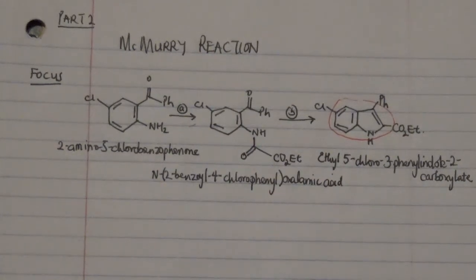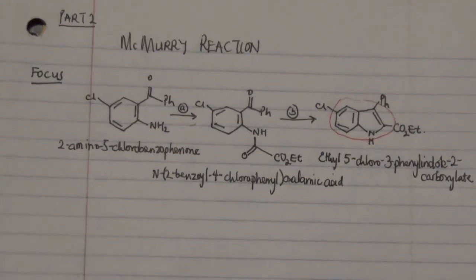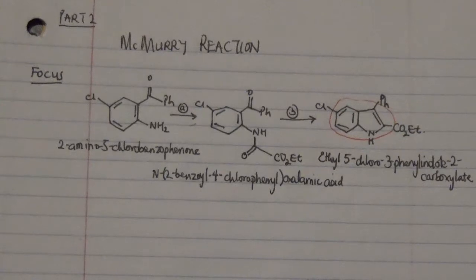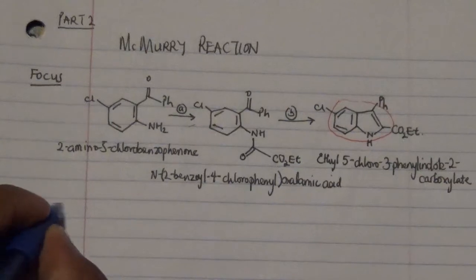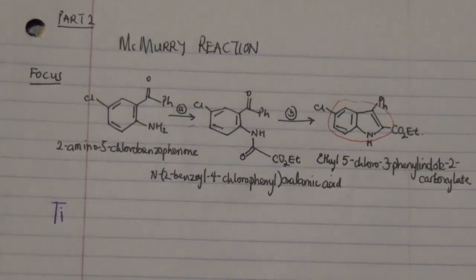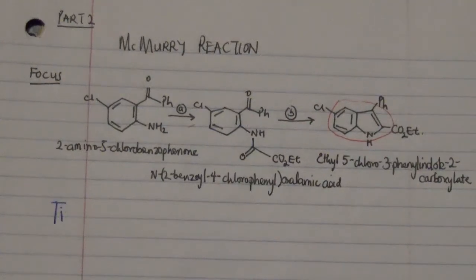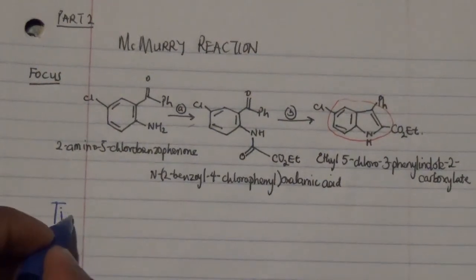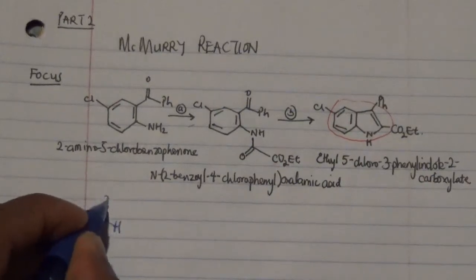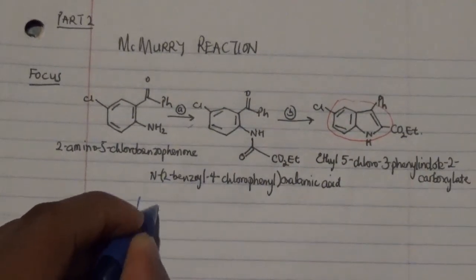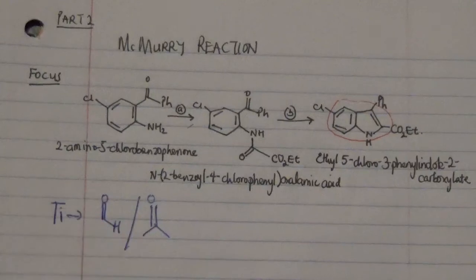Now, talking about the indole reaction, the most important thing about this McMurray reaction or indole formation is how McMurray works. McMurray takes advantage of the low-valence electrons of the titanium catalyst and how this titanium catalyst is going to be involved in the coupling of either an aldehyde or a ketone.